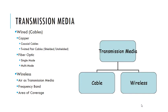Twisted pair cables can either be shielded or unshielded — either STP (shielded twisted pair) or UTP (unshielded twisted pair). Fiber optic cables do not transmit electricity; they transmit light. Light moves through fiber optic cables in the form of single-mode or multimode light.